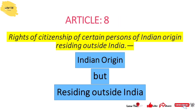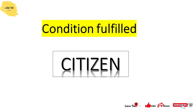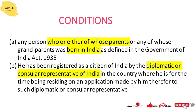Article 8 covers the rights of citizenship of certain persons of Indian origin residing outside India. If a person is of Indian origin but residing outside India, they can be an Indian citizen if they fulfill two conditions: first, he or his parent or grandparent was born in undivided India; or second, he is registered as a citizen of India by a diplomatic or consular representative.